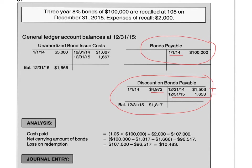This was the last journal entry as of 12-31-15 when we amortized the discount. And you potentially have one more account related to the bonds: bond issue cost. We have $5,000 as of January 1, 2014 that we debited, and we have again two journal entries for amortization. The current balance in this account is $1,666.